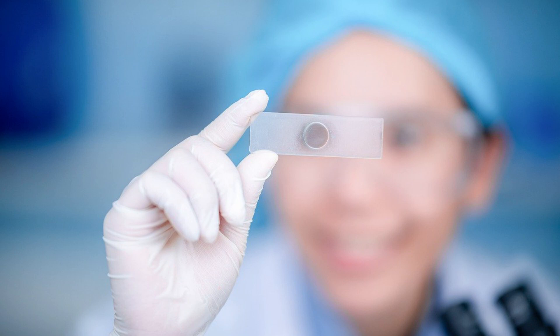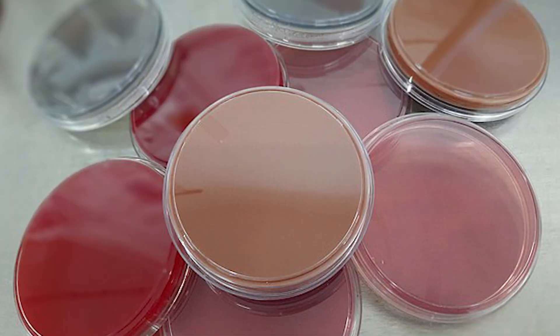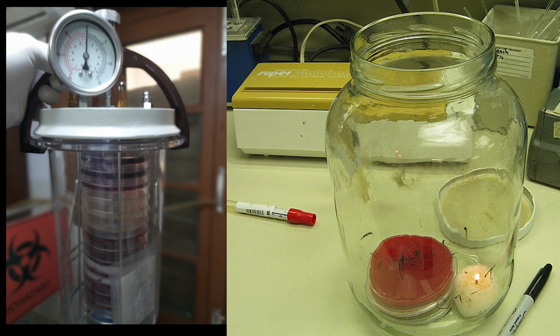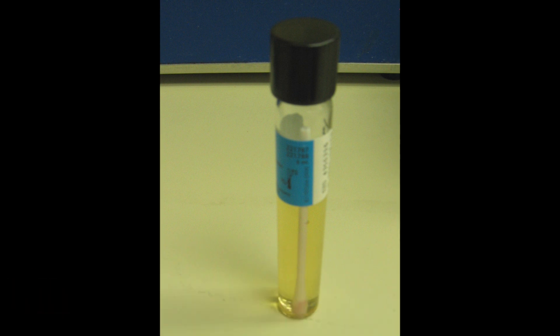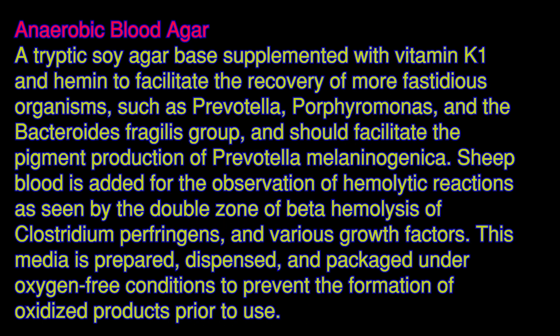Culture media for CSF: bacterial and fungal routine media should include a 5% sheep blood agar plate, chocolate agar plate, and an enrichment broth, usually thioglycolate broth. Plates should be incubated at 37°C in 5-10% CO2 for at least 72 hours, or a candle jar method can be used. The broth should be incubated in air at 37°C for at least five days with the broth cap loose to allow free air exchange. If anaerobic bacteria are suspected or a brain abscess is suspected, an anaerobic blood agar plate must be inoculated.